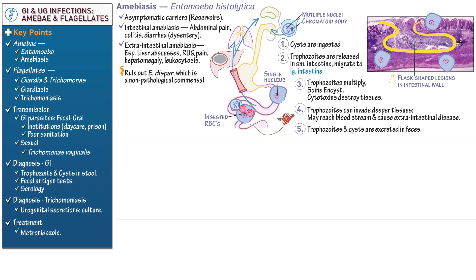Finally, write the following diagnostic tip: in fecal samples, one must be careful not to confuse Entamoeba histolytica with a morphologically similar species, Entamoeba dispar, which is a non-pathological commensal. A helpful distinguisher is that only Entamoeba histolytica engulfs red blood cells, although these may not always be visible. Write that carriers of Entamoeba histolytica can be prescribed chromamycin or iodoquinol. Treatment for active amoebiasis typically involves metronidazole.